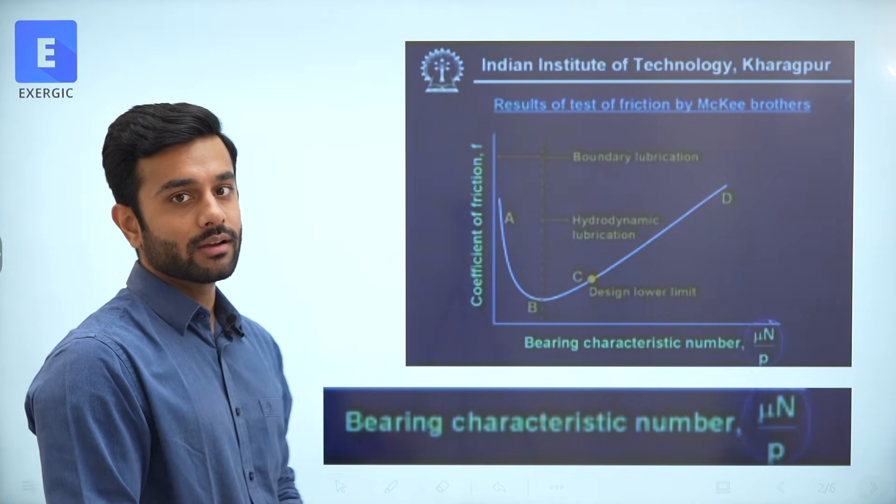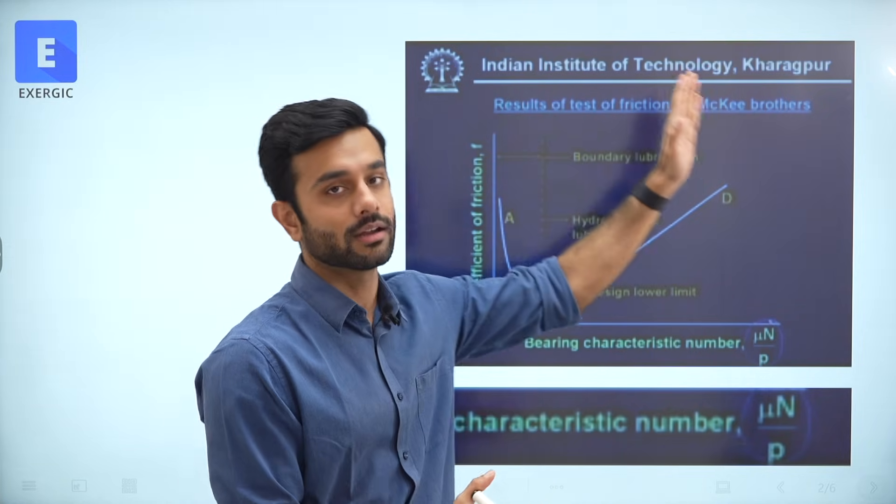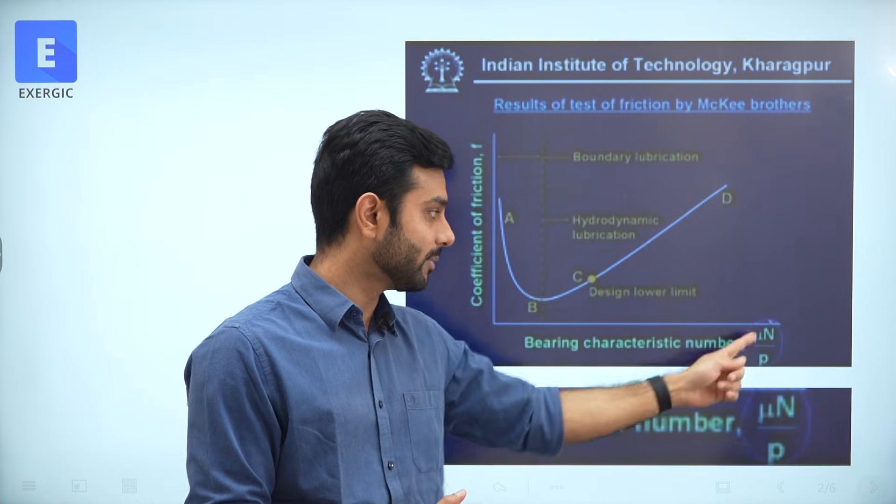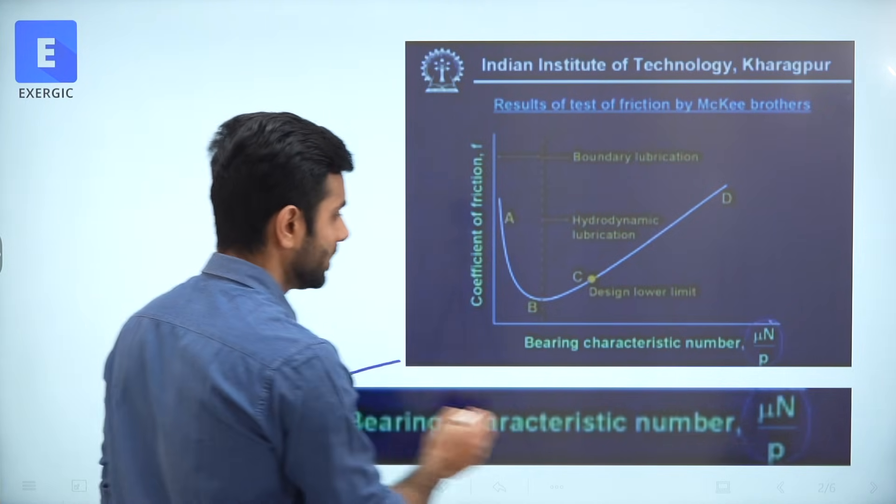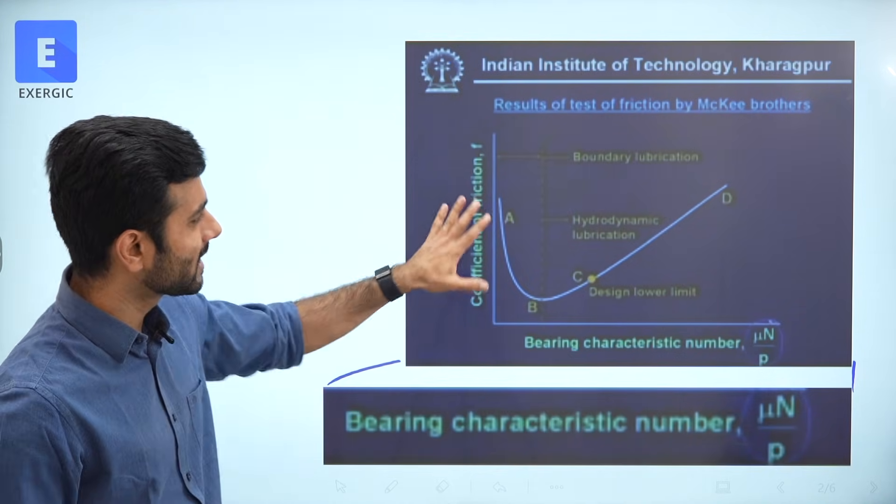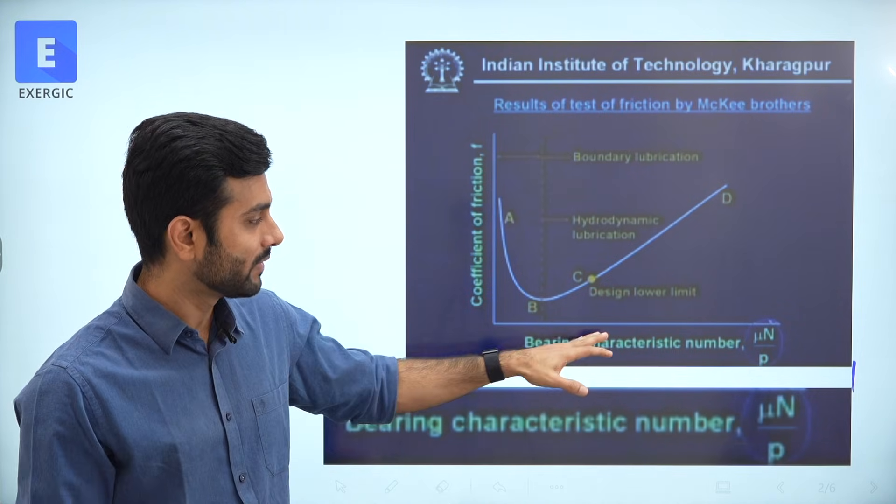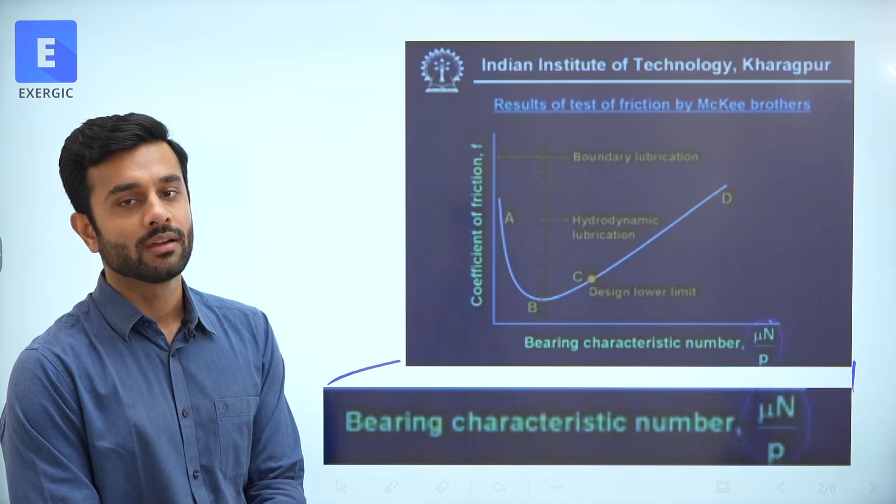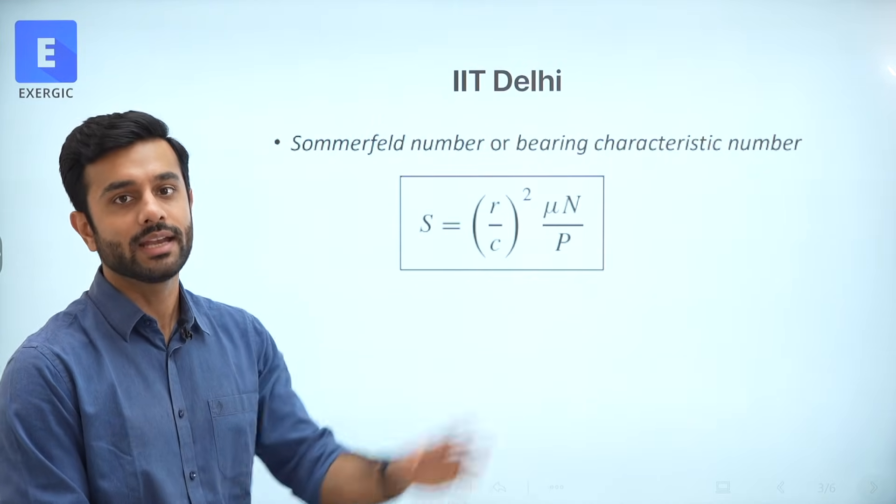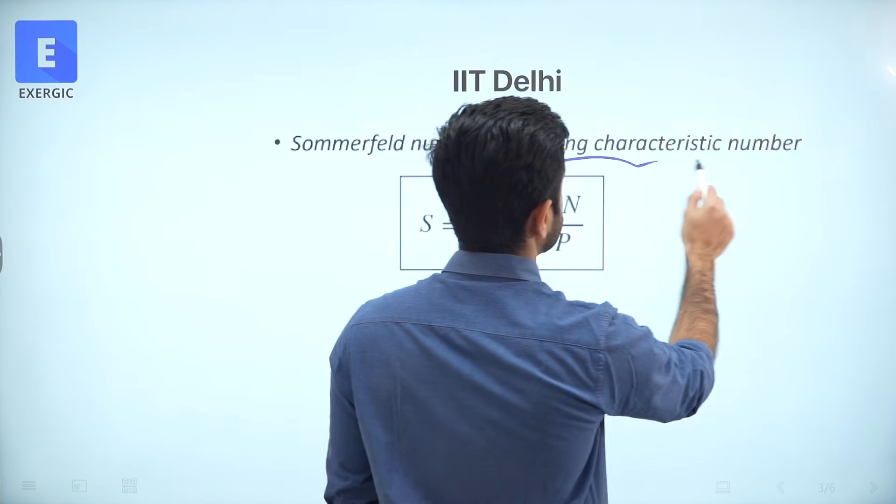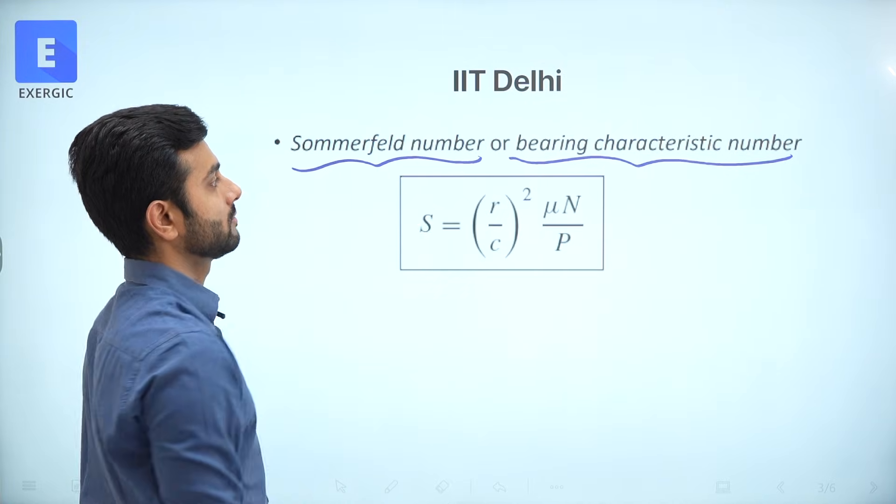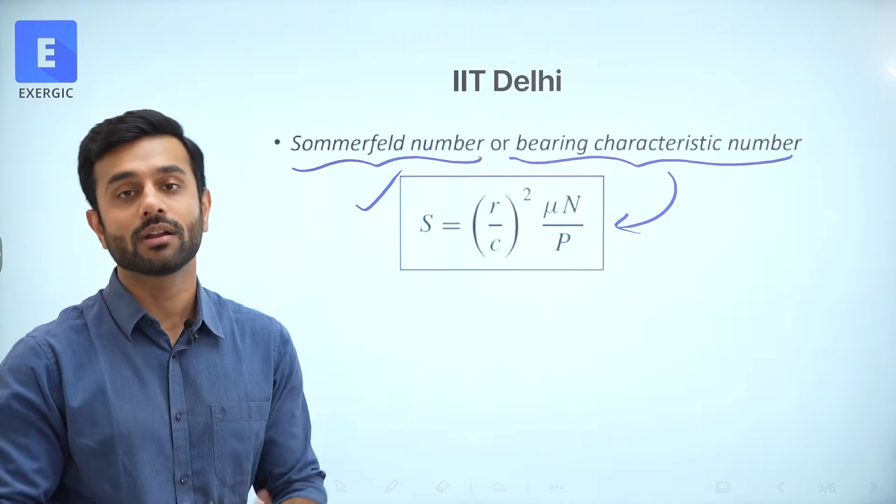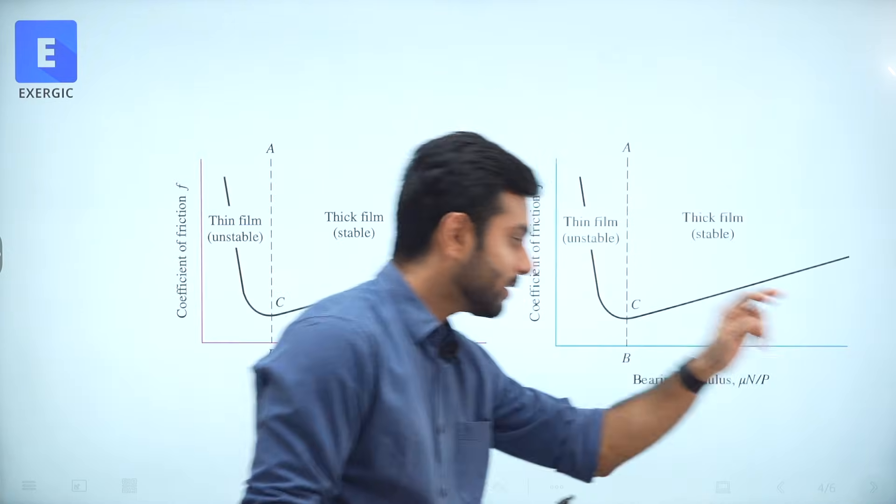This is the formula of Bearing Characteristic Number or Sommerfeld Number. Yes, those simple looking formulas, you might be thinking, sir, what is so debatable in that formula? It is so simple, straight formula. Let me show you what is the point of debate in this formula. Look at the screenshot here. This is from the lectures, NPTEL lectures of IIT Kharagpur.